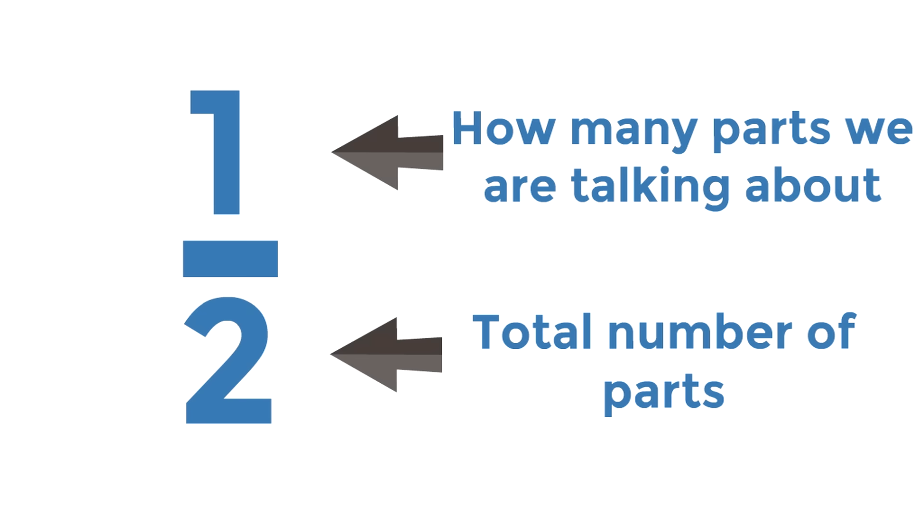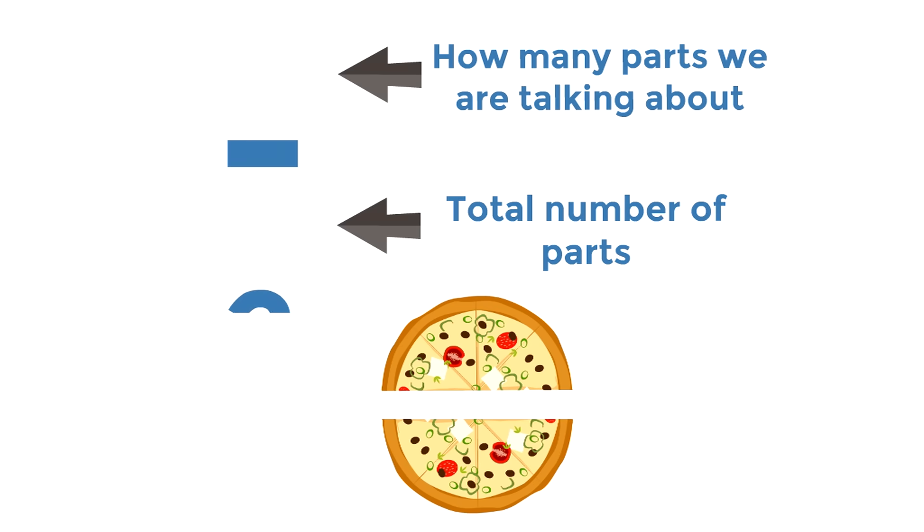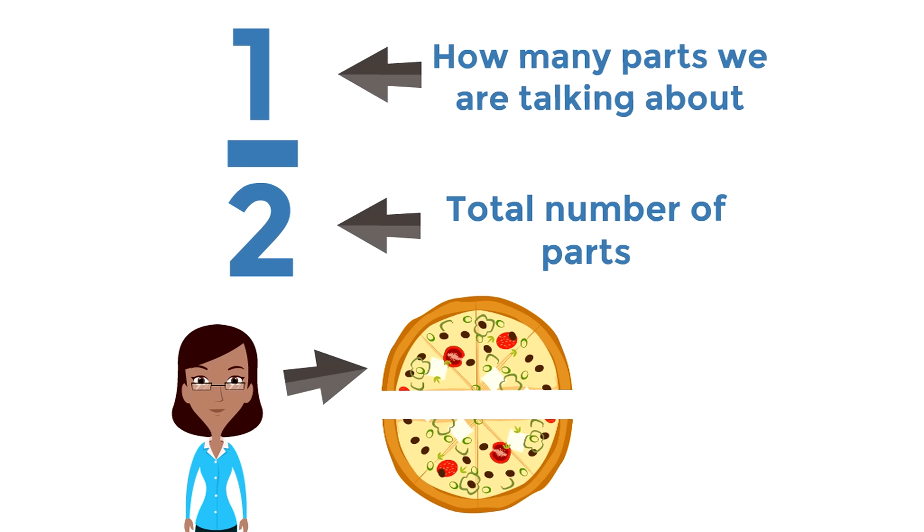Let's go back to our example. There are a total of two parts to the pizza. So there's a two on the bottom. And Cindy just gets one part. That's the part we're talking about. So Cindy gets just one half of the pizza. She doesn't get the whole thing. She gets just one part. She gets one half.